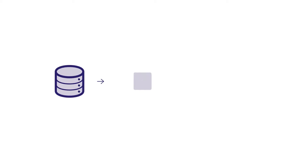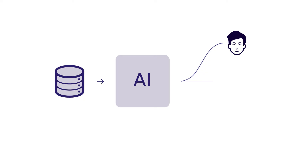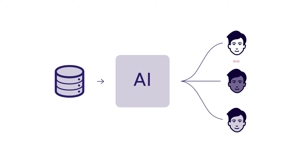So how does bias get into AI? AI models and their predictions are heavily determined by the data used for training. The way this data is gathered or selected can influence the AI model and potentially introduce bias which reflects society's biases into the model. Let's go into some ways in which bias can be introduced into AI.